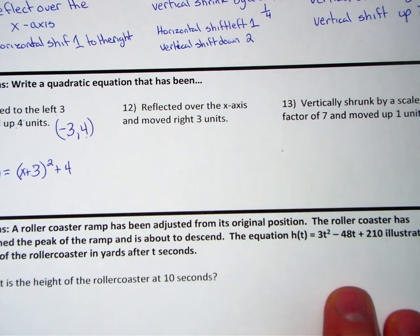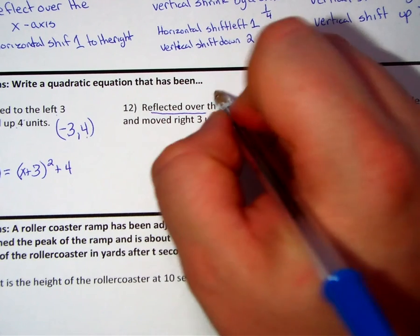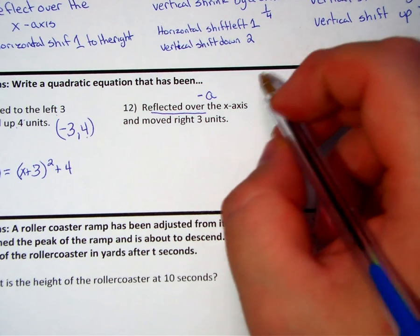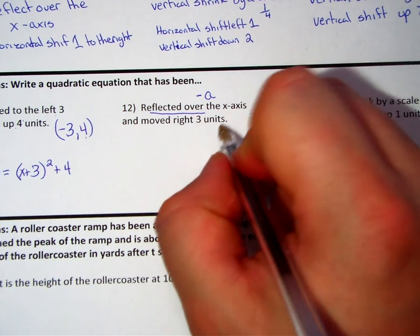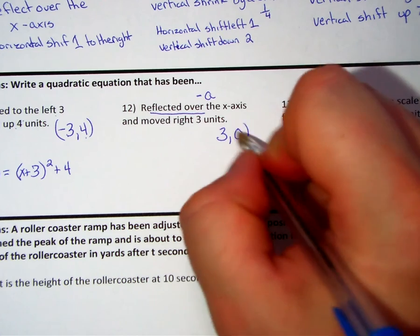Number twelve: reflect over the x-axis. Now that's important because that means we have an a that has a negative value in front of it. Move to the right three units. So if we move to the right three units, we have shifted our x but we have not shifted our y at all.